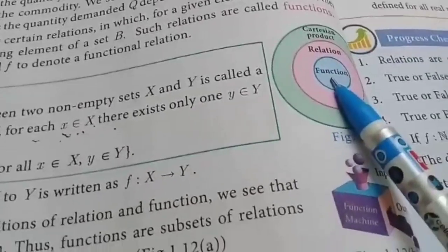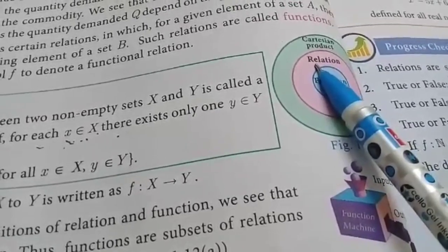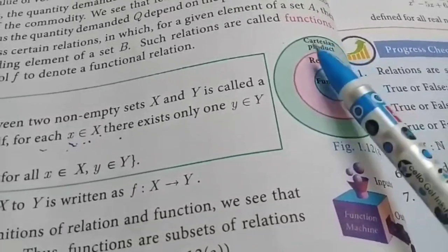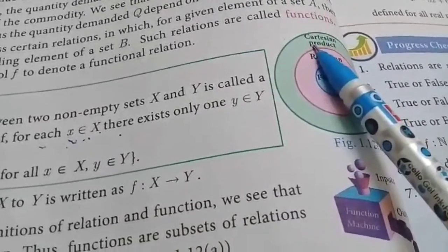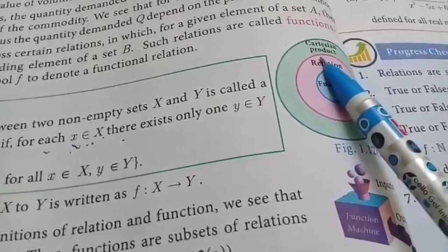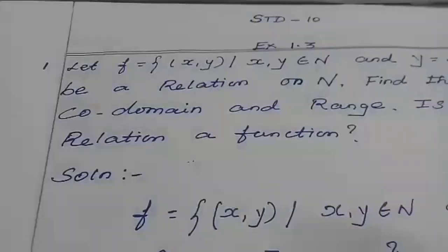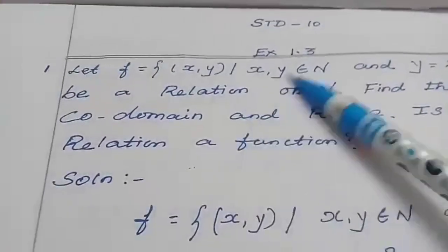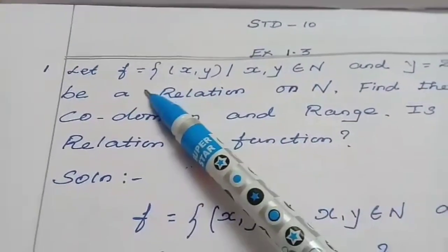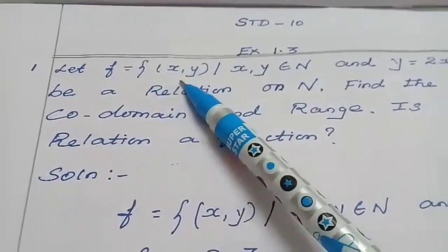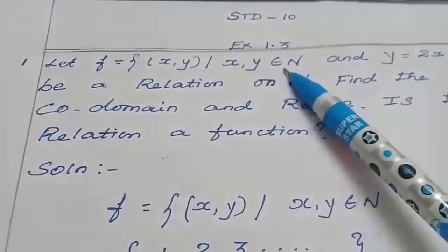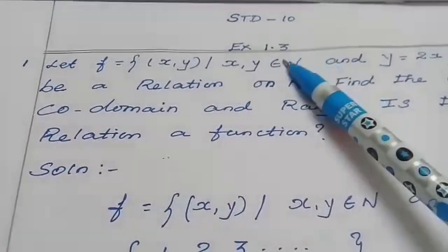Here, see the diagram: a function is a subset of a relation, and a relation is a subset of the Cartesian product. Let's move on to Exercise 1.3. The first question: let f = {(x, y) : x, y belongs to natural numbers and y = 2x} be a relation on N.